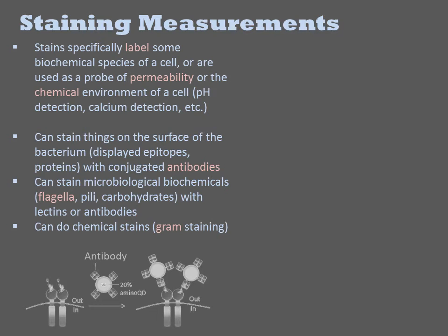You can stain things on the surface of the bacterium, such as displayed epitopes and surface proteins with conjugated antibodies. These are reagents constructed from fluorophores and antibodies chemically linked together. They will stain the cell by specifically binding to the epitope on the surface of the cell. You can quantify the staining by any of the various fluorescence methods. You can also stain microbiological biochemicals on the cell surface, such as flagella, pili, and carbohydrates using lectins or antibodies.